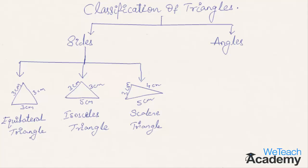A triangle having all three sides of equal length is called an equilateral triangle. A triangle having two sides of equal length is called an isosceles triangle. And if all three sides of a triangle are of different length, the triangle is called a scalene triangle.